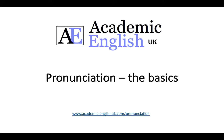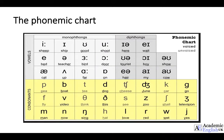Hi, welcome to my lesson today on pronunciation the basics. I'd like to start by looking at the phonemic chart. The phonemic chart is a chart of 44 symbols and letters that represent the sounds of English. Here we have consonants in yellow and we have vowels in grey, and the vowels are separated into monothongs and diphthongs.